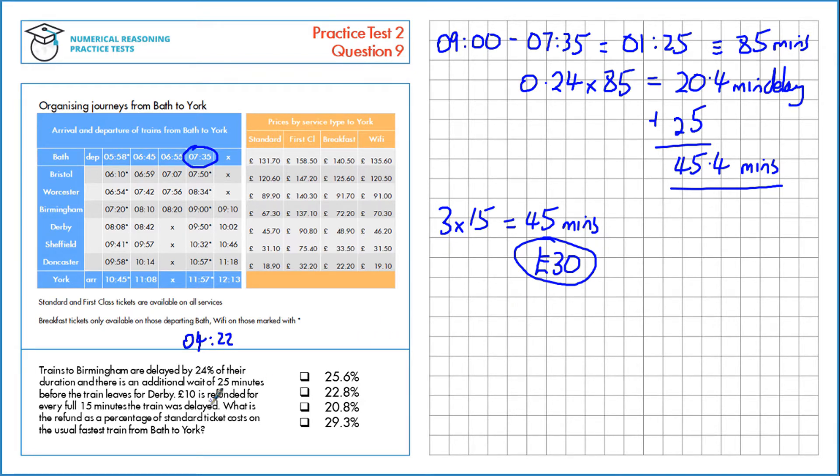We want that as a percentage of the standard ticket costs for that train, and if we look on that train here, we know that the standard ticket cost is £131.70. So, £30 divided by £131.70 multiplied by 100 is 22.8%.